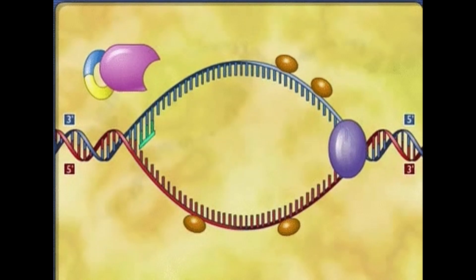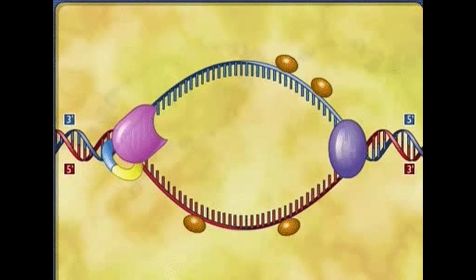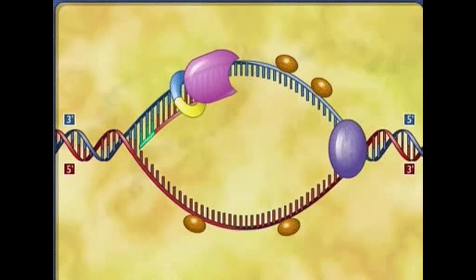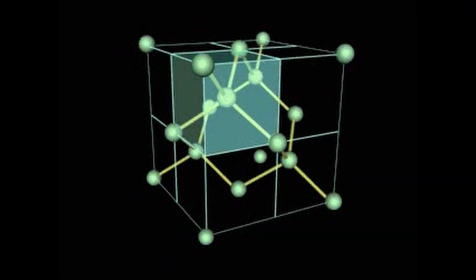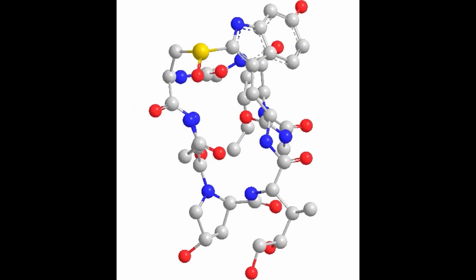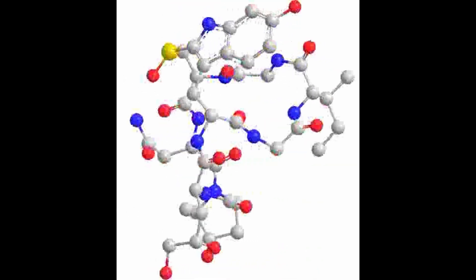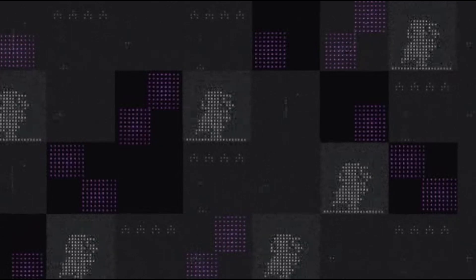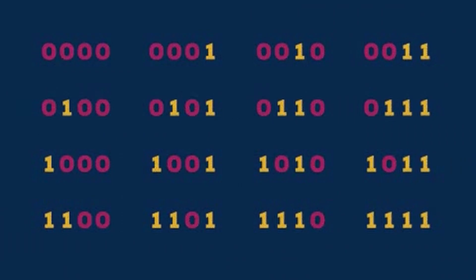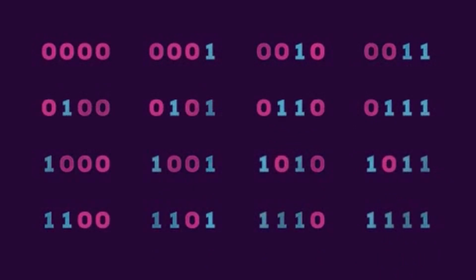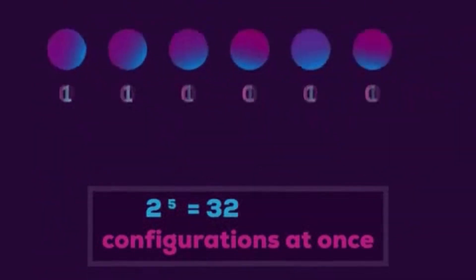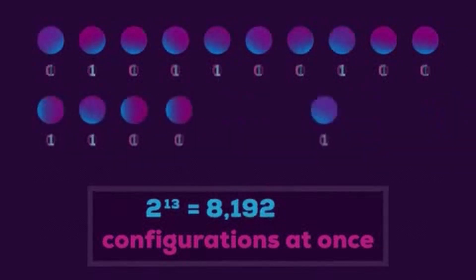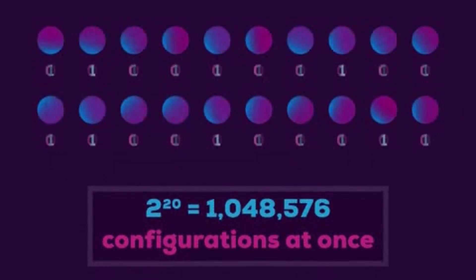There are five key elements of a quantum computer: qubits, superposition, entanglement, interference, and measurement. Qubits are the basic building blocks of quantum computers and can exist in multiple states simultaneously. Superposition is the ability of a qubit to exist in multiple states at once. Entanglement is a phenomenon where two or more qubits become correlated such that the state of one qubit depends on the state of the other. Interference allows a quantum computer to manipulate the probability amplitudes of qubits to produce constructive or destructive interference. Finally, measurement is the process by which a quantum computer extracts information from a qubit.